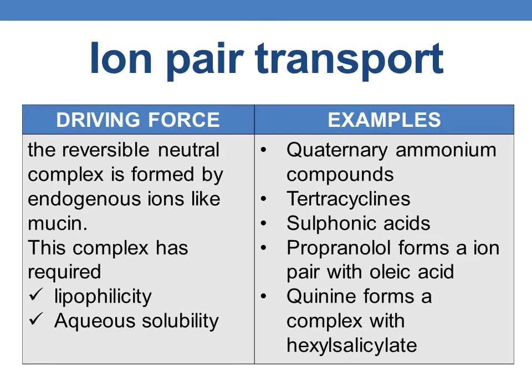Drugs such as quaternary ammonium compounds, tetracyclines, and sulfonic acids are transported by ion pair transport. Additional examples include propranolol, which forms an ion pair with oleic acid, and quinine, which forms a complex with hexyl salicylate.